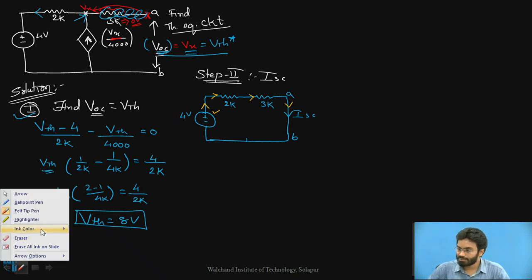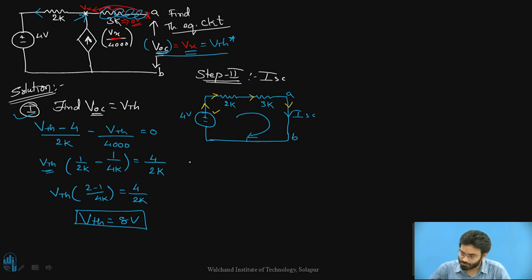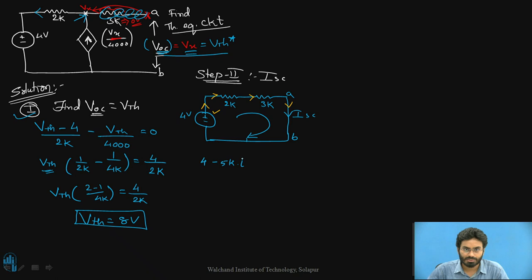Now let's write the loop equation for this simplified circuit, with the current flowing clockwise being ISC. The equation is: 4 minus (2k plus 3k) times ISC equals zero, giving 4 minus 5k times ISC equals zero. On simplification, the value of ISC is 4/5 milliamps.